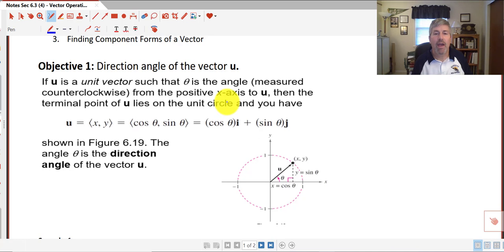And you have that vector u equals essentially in component form x and y, or on our unit circle cosine theta, sine theta. Or you could look at it as cosine theta i plus sine theta j, which was that linear combination that we saw in an earlier video.